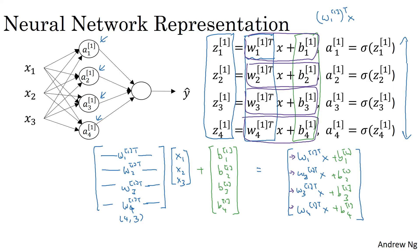So in other words, we've just shown that this thing is therefore equal to z11, z12, z13, z14, as defined here. And maybe not surprisingly, we're going to call this whole thing the vector z1, which is taken by stacking up these individuals of z's into a column vector. When we're vectorizing, one of the rules of thumb that might help you navigate this is that when we have different nodes in a layer, we'll stack them vertically.